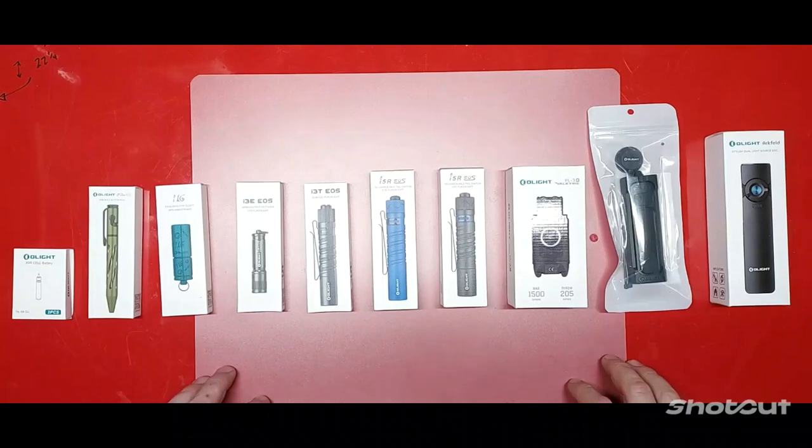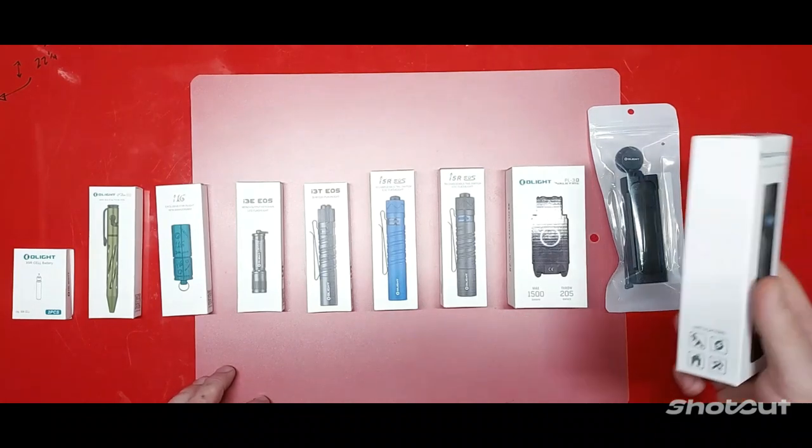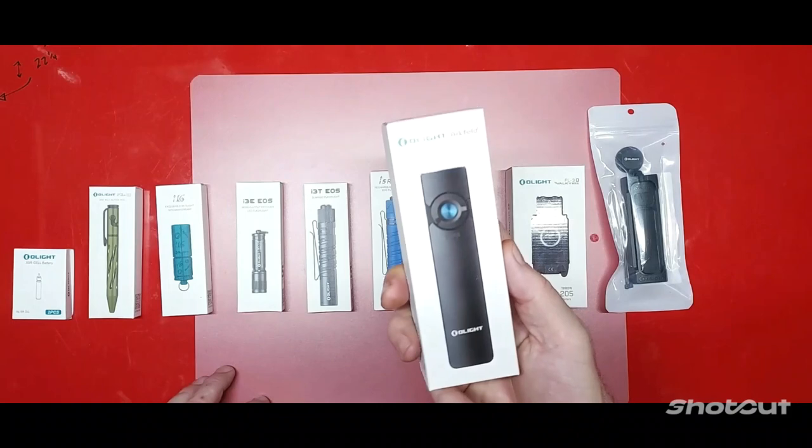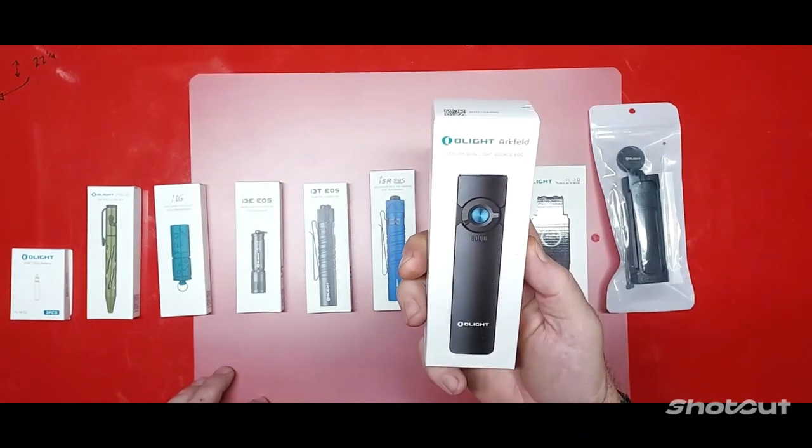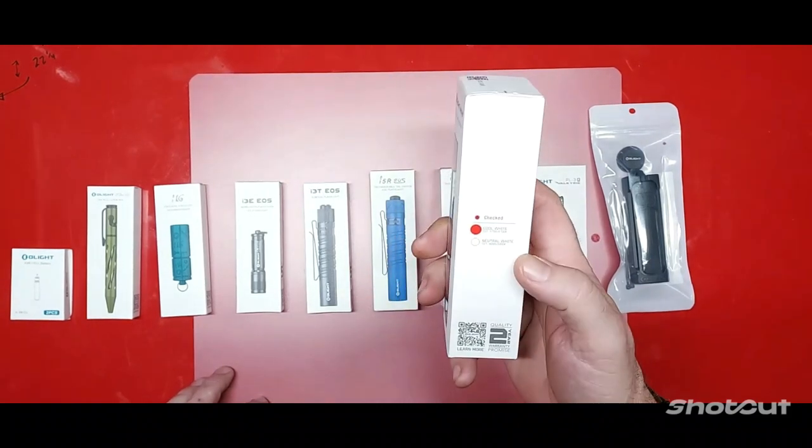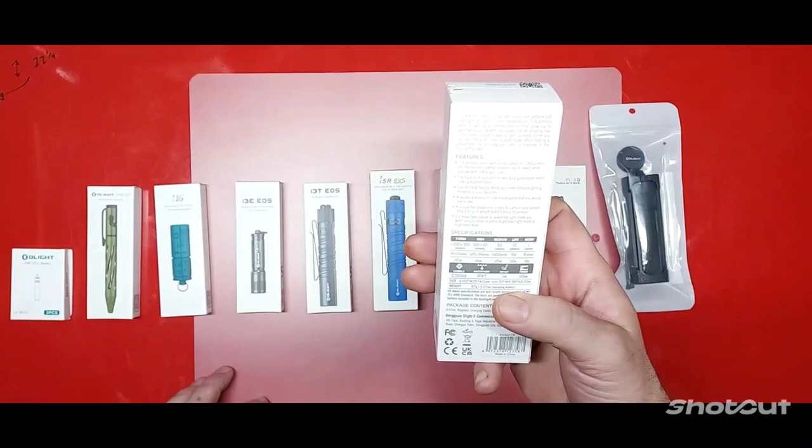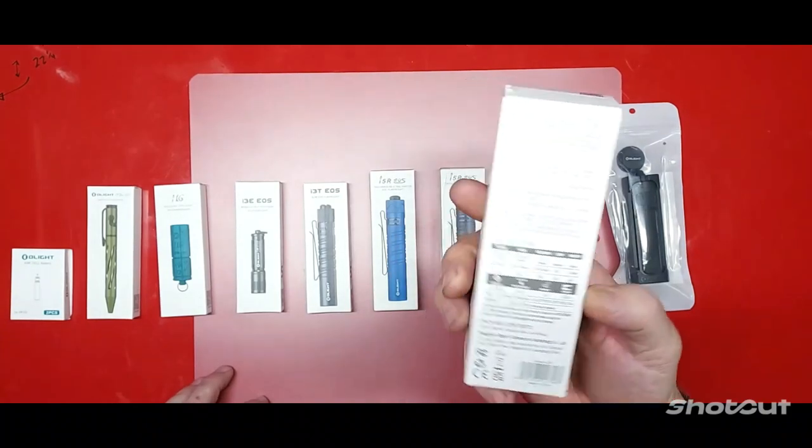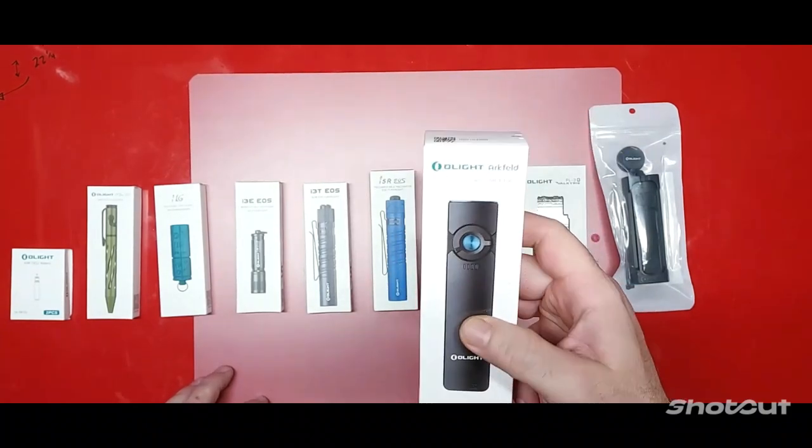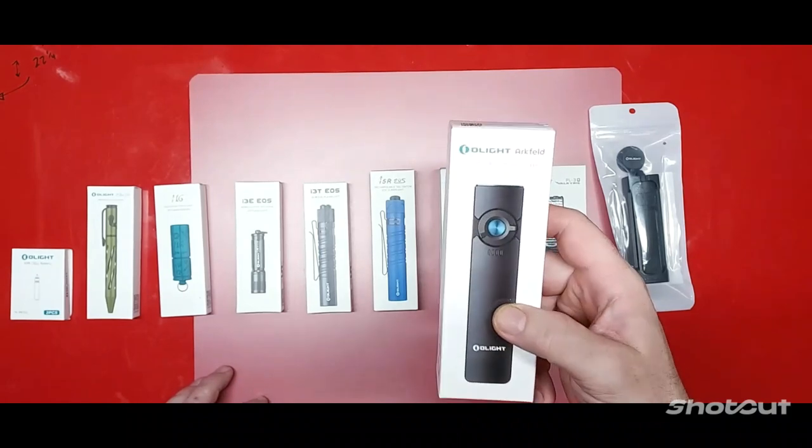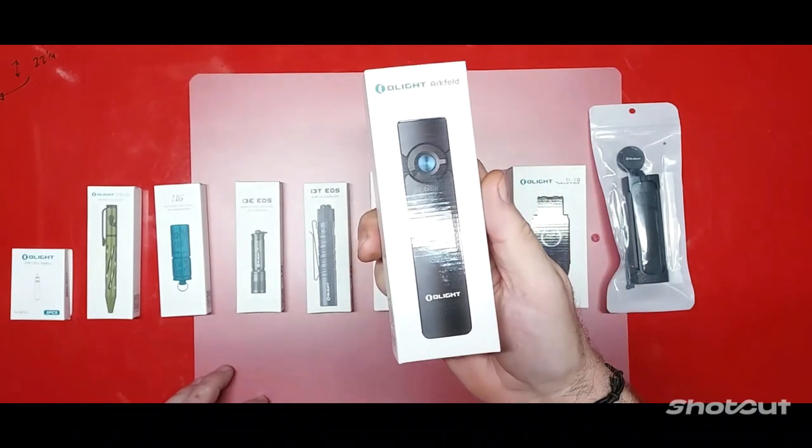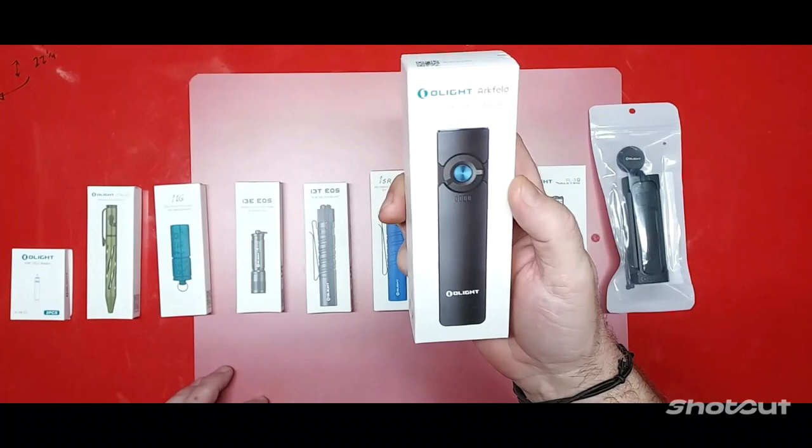So anyway, first up we've got the Arc Field dual light source EDC flashlight. This one is the cool white version. I don't know if you know or not, this is a flat wide EDC flashlight and it has a laser light pointer with it, so that'll be really cool to check out.